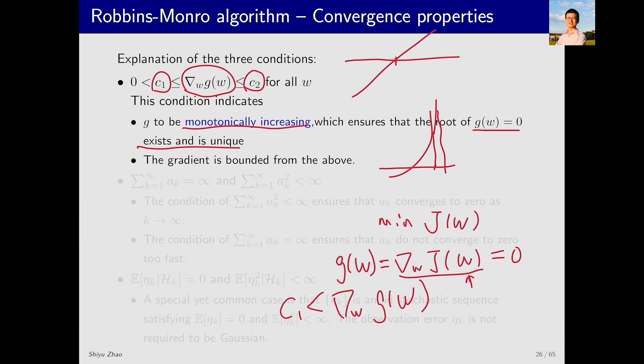A positive definite Hessian matrix means that the objective function is convex. Therefore, this property corresponds to convexity, making it a mild condition.